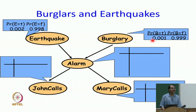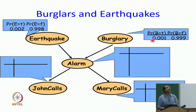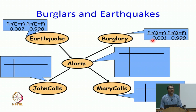How many parameters do I need? People say 2. What are the 2 parameters? Earthquake and not earthquake, burglary and not burglary.